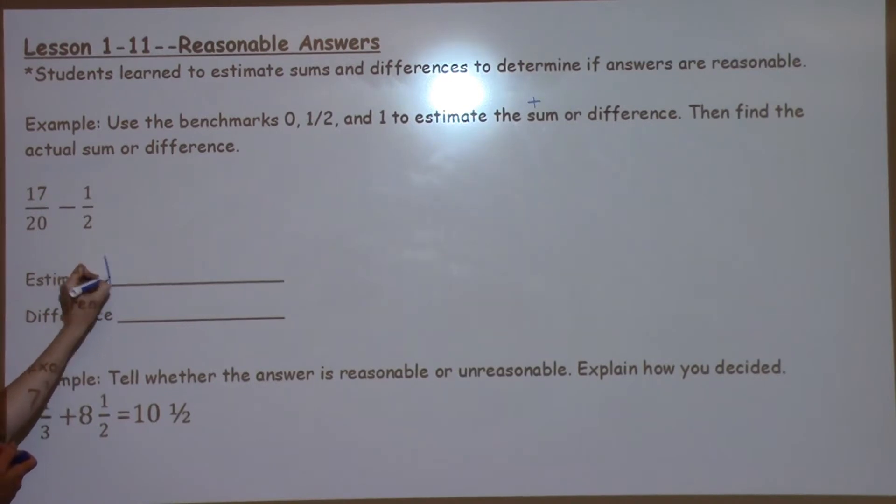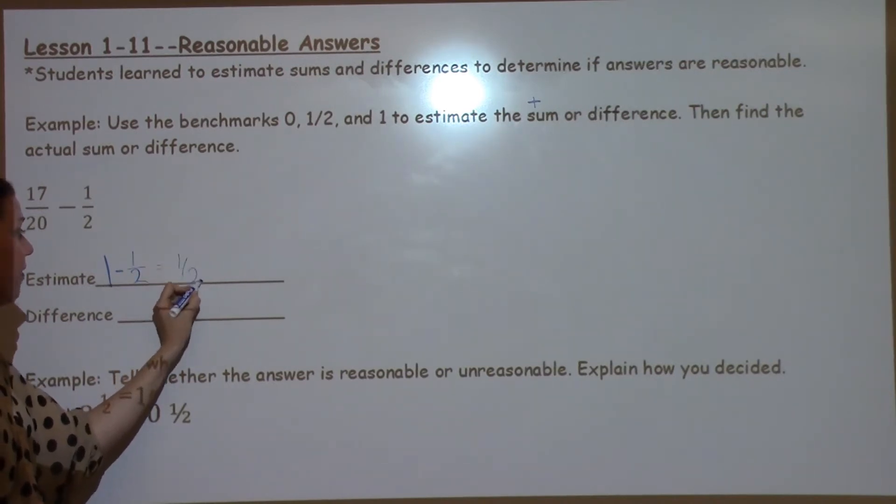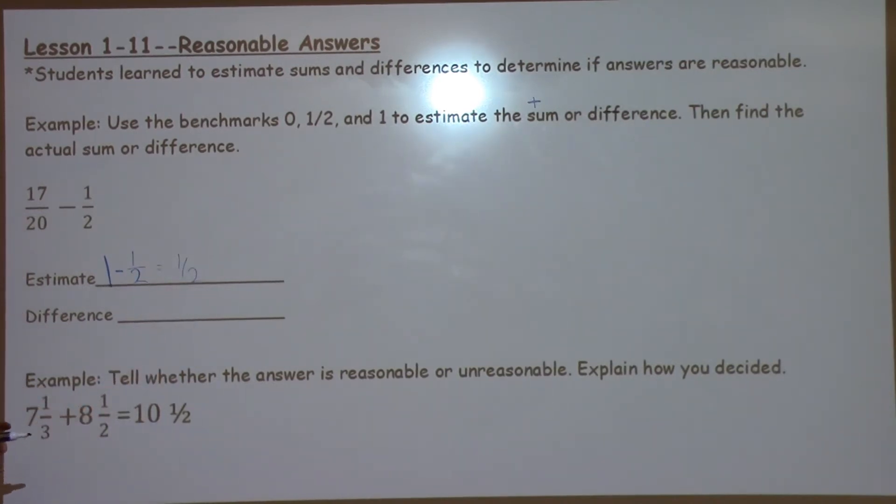I'm going to write down 1 for this number right here, write down my subtraction sign, and then 1 half. This one's really easy because we have to round to 0, 1 half, or 1 whole. We know 1 half is closest to 1 half. If I take 1 minus 1 half, my answer is 1 half. So our estimate would be about 1 half.